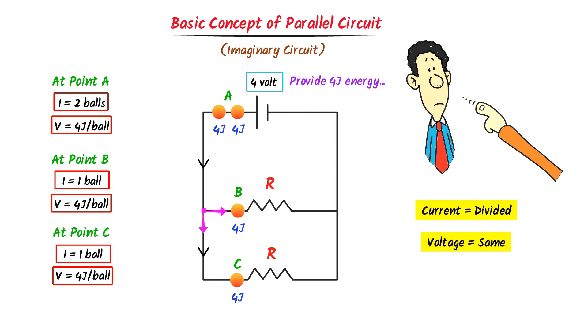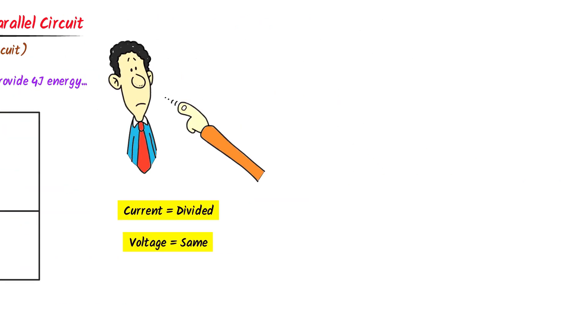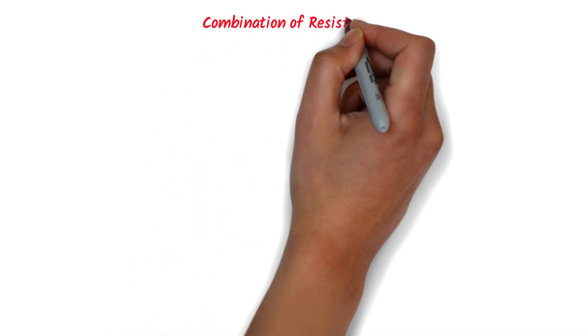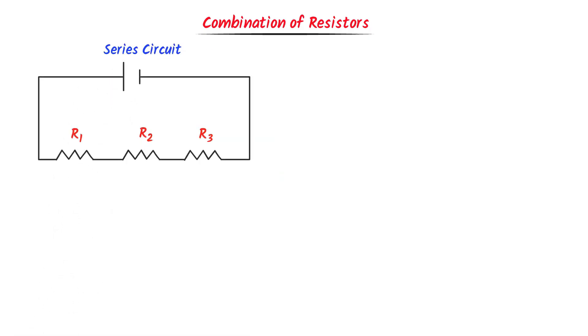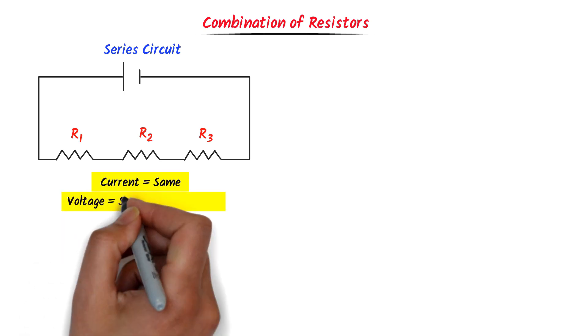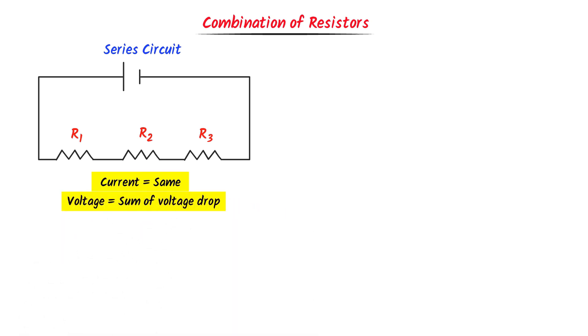Therefore, note that current is divided in a parallel circuit while voltage remains constant in a parallel circuit. Now let me teach you the combination of resistors in series and parallel circuits. Consider these three resistors connected in a series way. We have already learned that current is constant throughout the circuit while voltage equals the sum of individual voltage drops.